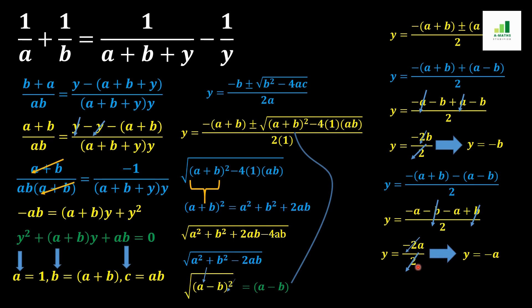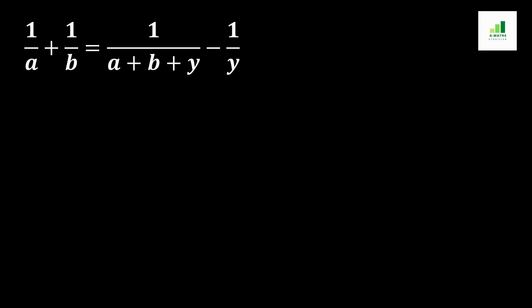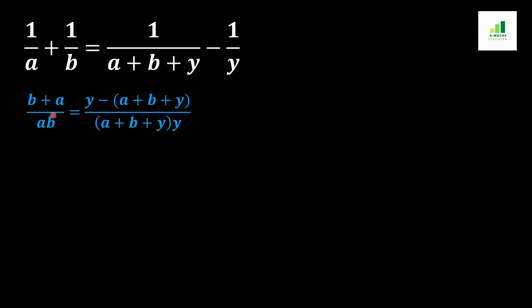So here we get two values for this equation: first is y = -b, and second is y = -a. Both values are the solution for this expression. Now I am representing another method to solve this equation, repeating the same initial steps of taking LCM on both sides.